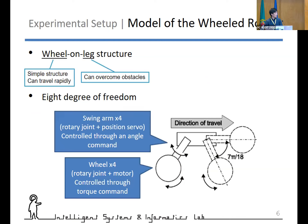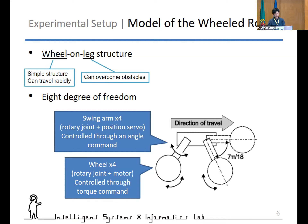Let me start talking about the model of the wheeled robot. We adopted a wheeled-on structure to be able to travel rapidly and overcome obstacles as well, and created a model with four swing arms and four wheels. The four arms are connected to the body by rotary joints and controlled through angle commands. Each wheel is connected to the end of each arm via a rotary joint and motor, and these wheels are controlled through torque commands.